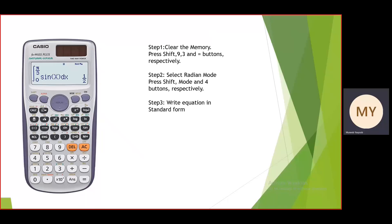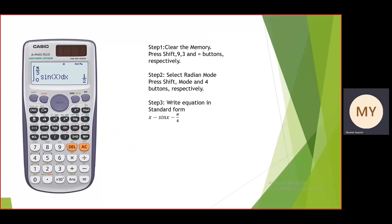To perform step number three, that is to write the equation in standard form — x minus sin(x) minus pi by 4 — on your calculator. Press the alpha button, then press the x button, then write minus, then press the sin button. To write x inside sin, press alpha then the x button, then close the bracket. Then press the minus button, and press the fraction button to write pi by 4. To write pi, press shift then the exponential button (multiply into 10 power x button), and in the denominator write 4.